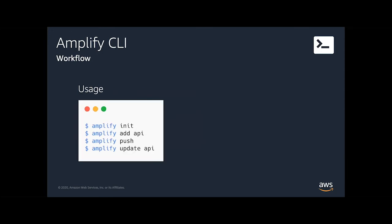Once you've configured the Amplify CLI once, you can start using it for multiple projects. You initialize a new project by running the init command, update existing services using the update command, add new services using the add command, and deploy updates using the push command. We're going to be using pretty much all of these in our workshop.